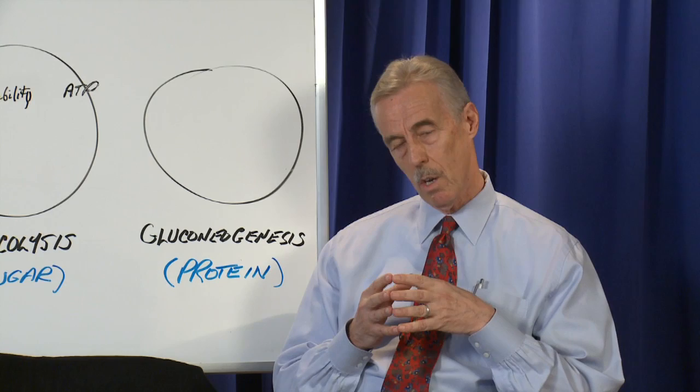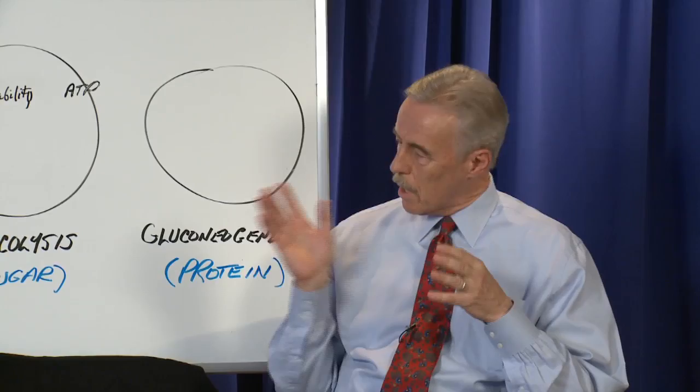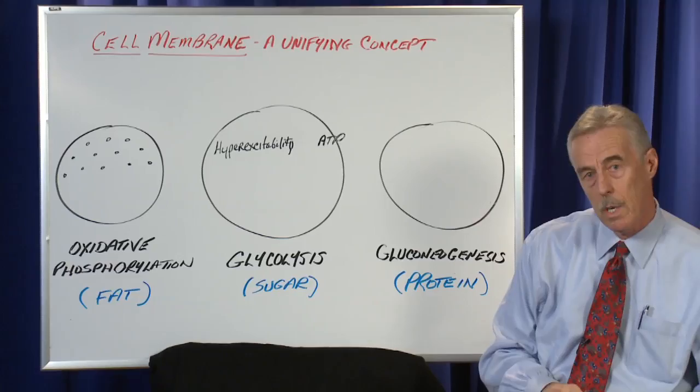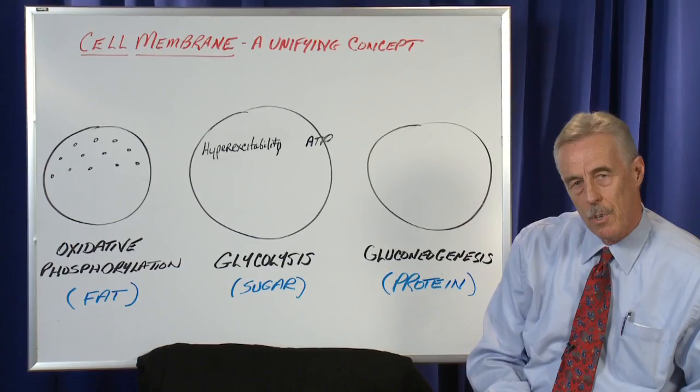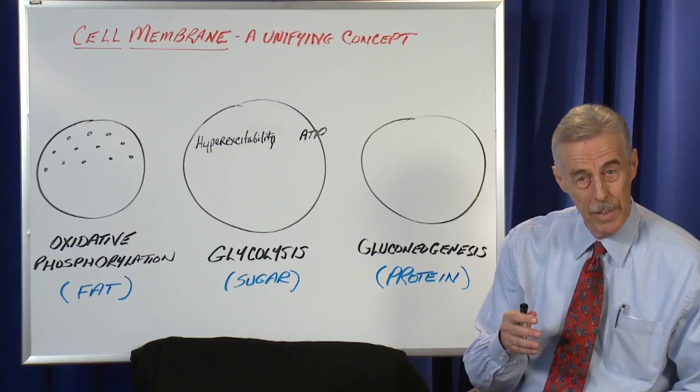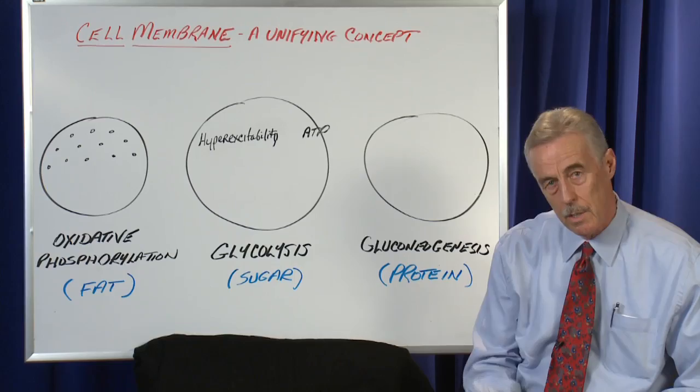The next thing I wanted to talk about is some of the energy states. The most important one that functions in most normal cells is the first energy state, which is the preferred one for cells for energy, called oxidative phosphorylation. That basically means the cell is using fats, especially essential fatty acids, to produce energy. It's the most efficient way of producing energy and the preferred way for cells to use.